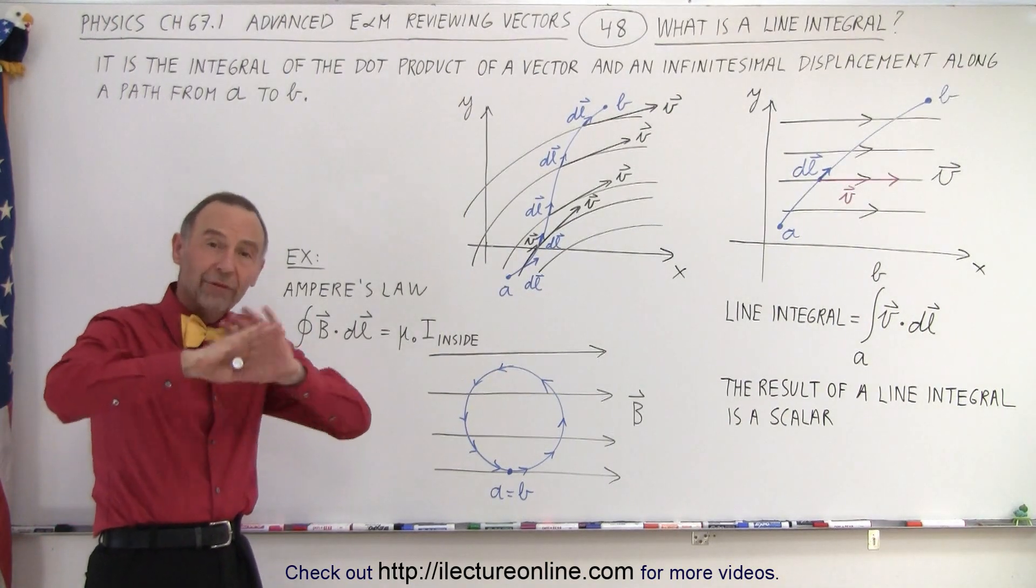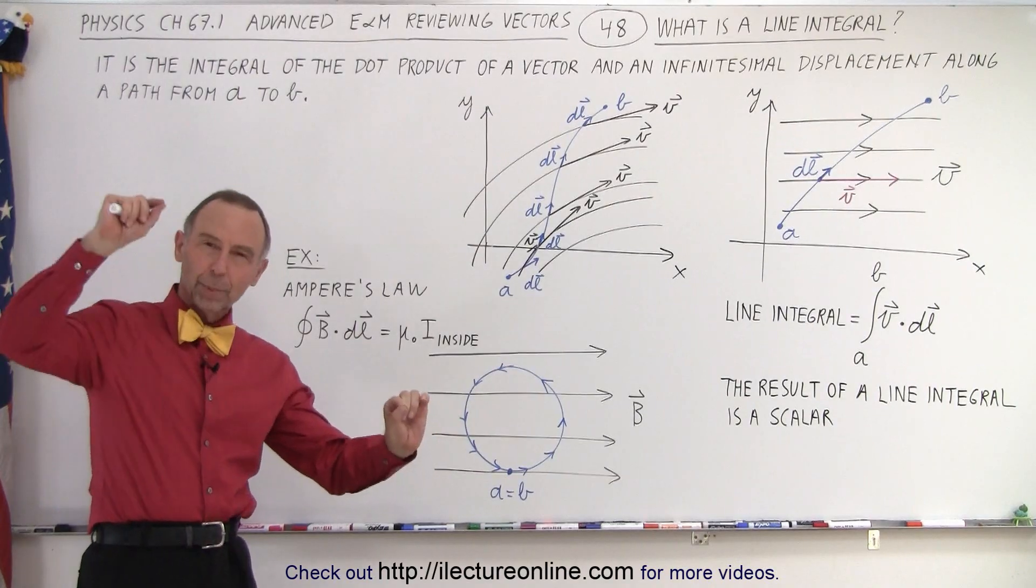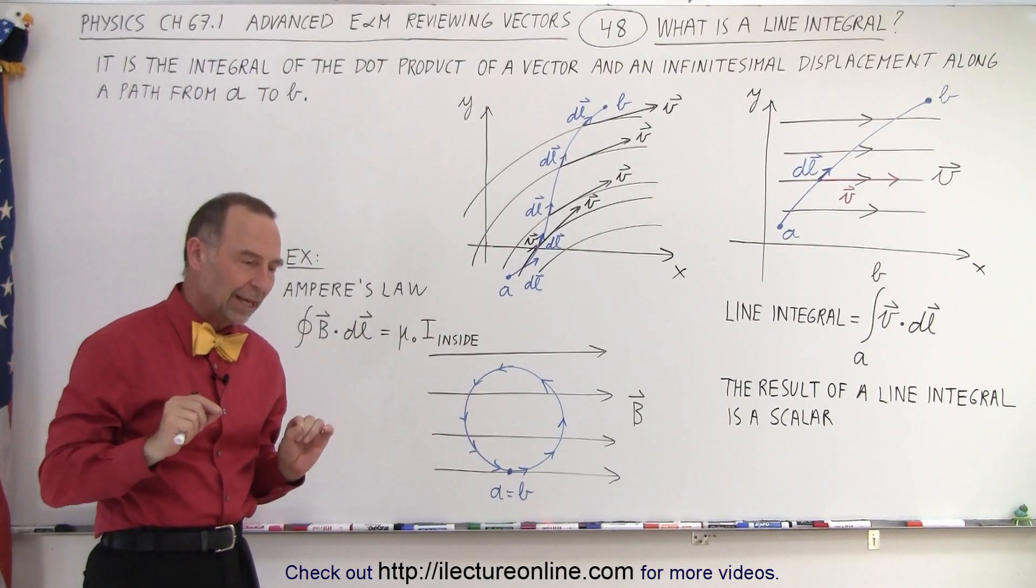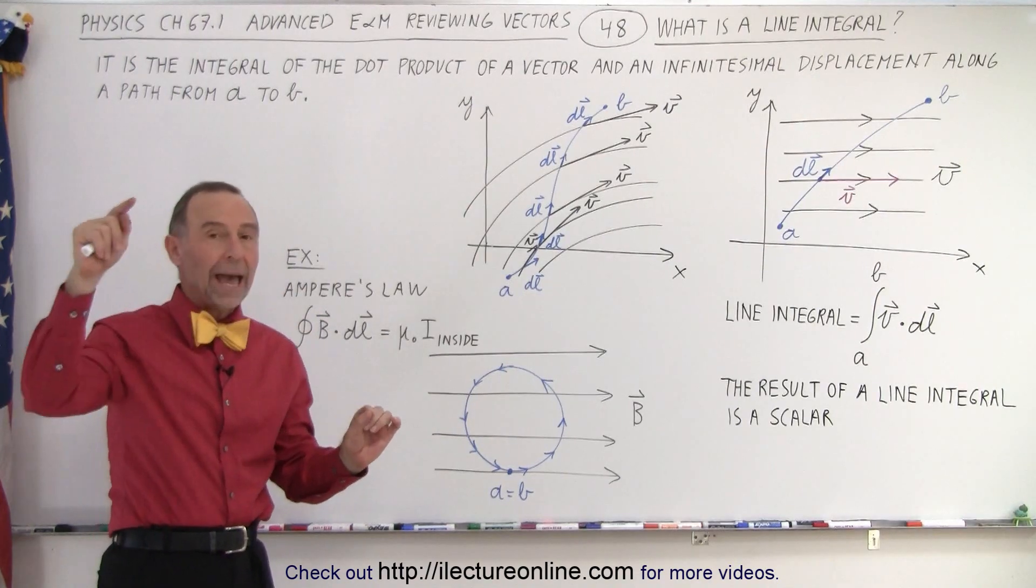So we have a vector or vector field. We have a point A and a point B inside the vector field and then we move from point A to point B along some path.